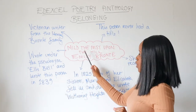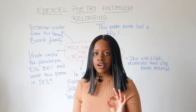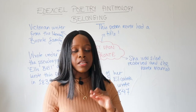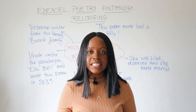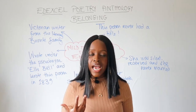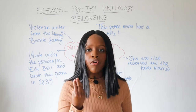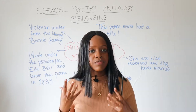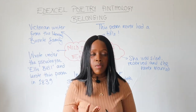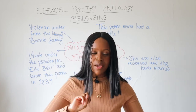She wrote this particular poem, 'Mild the Mist Upon the Hill', in 1839, under that pseudonym. Victorian society really saw women as inferior to men and it was often seen as improper for a woman to engage in lots of writing or activism. Women were expected to be passive — angels of the house.